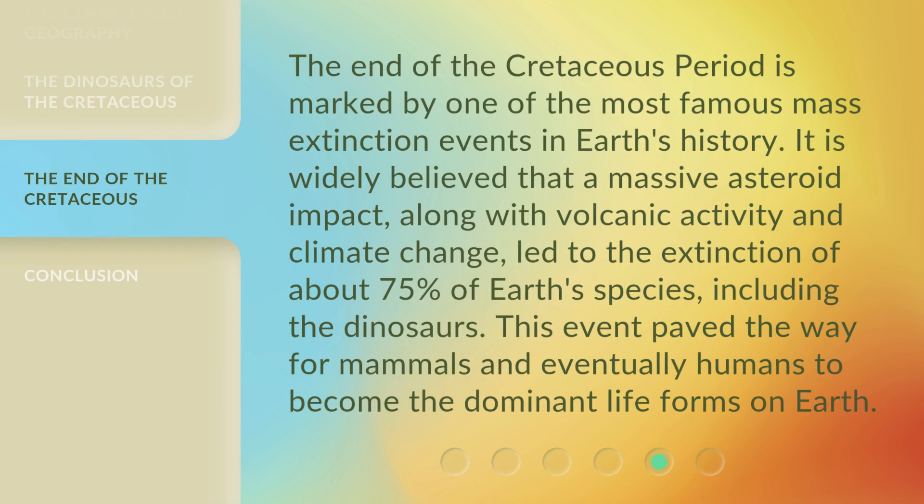The end of the Cretaceous period is marked by one of the most famous mass extinction events in Earth's history. It is widely believed that a massive asteroid impact, along with volcanic activity and climate change, led to the extinction of about 75% of Earth's species, including the dinosaurs. This event paved the way for mammals and eventually humans to become the dominant lifeforms on Earth.